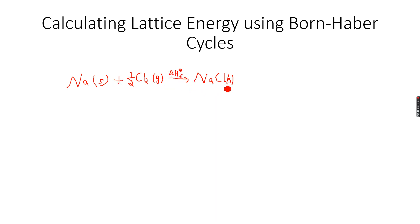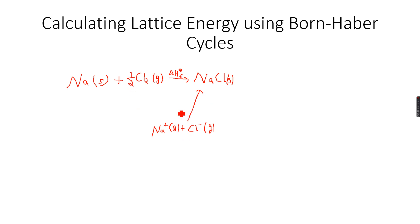We also have Na⁺(g) plus Cl⁻(g). We can form NaCl from these gaseous ions, and this change will be the lattice energy — because this matches the definition of lattice energy: the enthalpy change occurring upon the formation of one mole of an ionic compound from its gaseous ions under standard conditions. The gaseous ions are on one side, the ionic solid is on the other, so this change is the lattice energy.